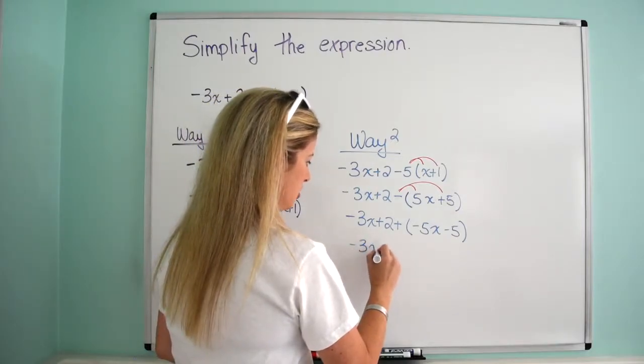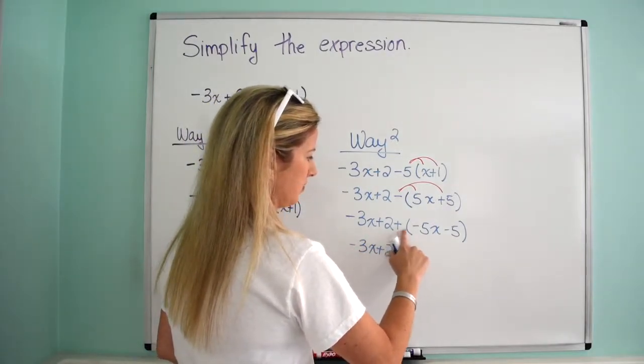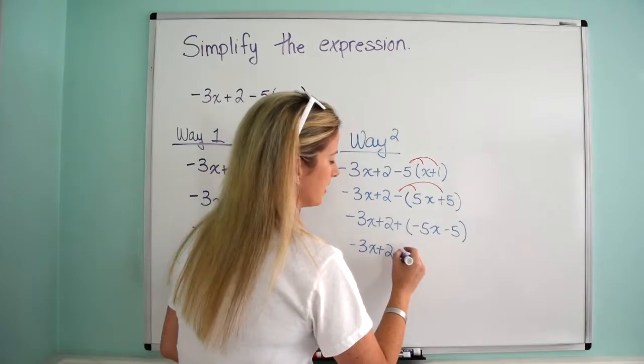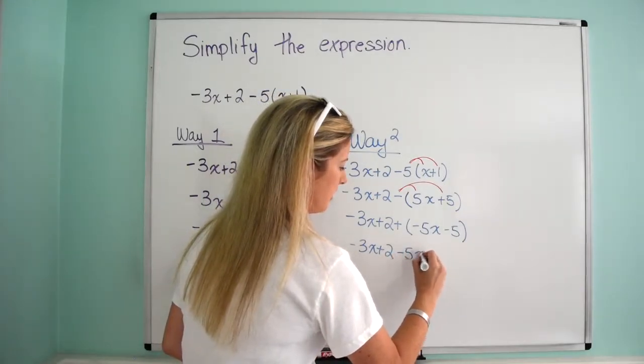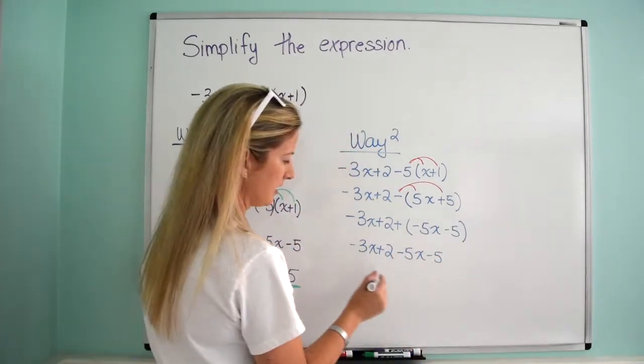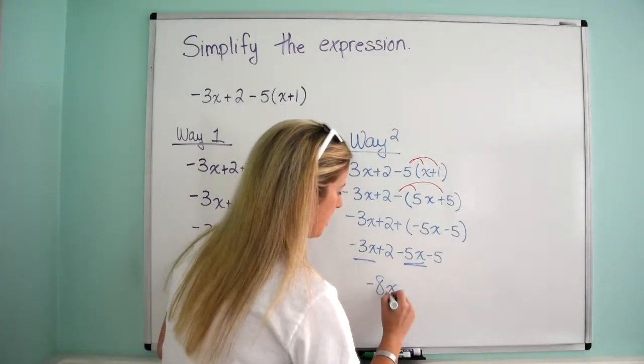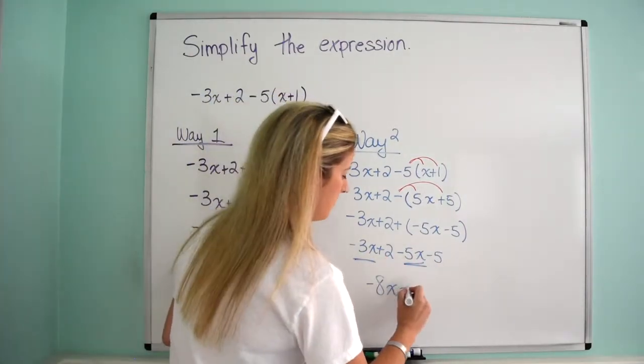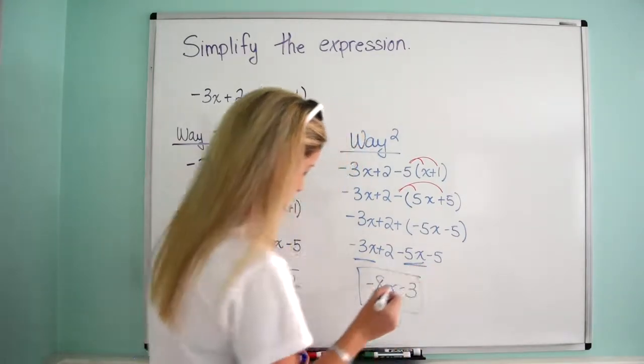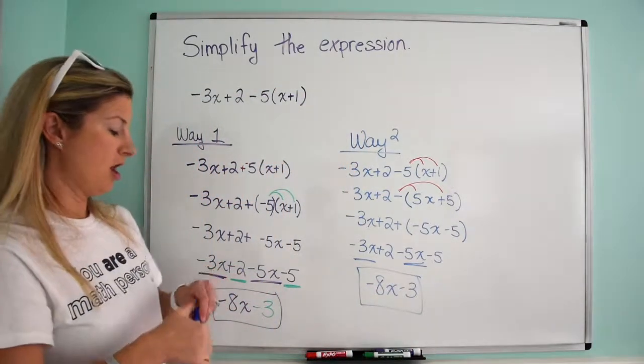So then I'll just continue on plus 2. And so then plus negative 5x, we can just write that as minus 5x, minus 5. And then again, combine like terms, negative 3x, negative 5x becomes negative 8x. And then positive 2 and negative 5 becomes negative 3. Perfect. So there are the two ways.